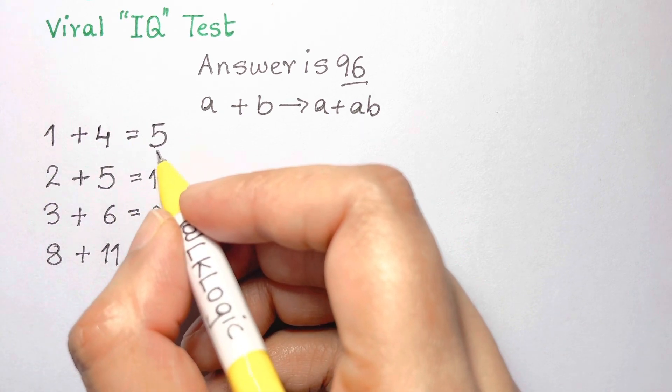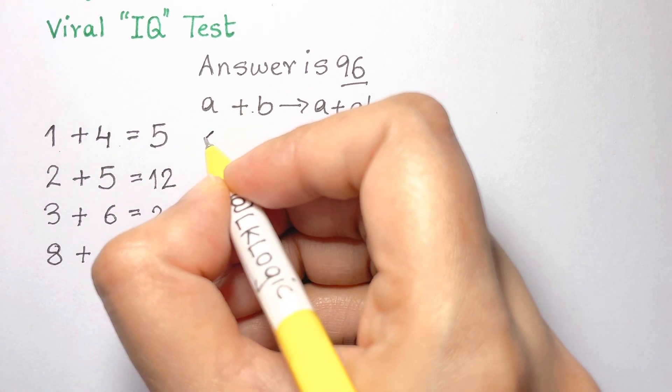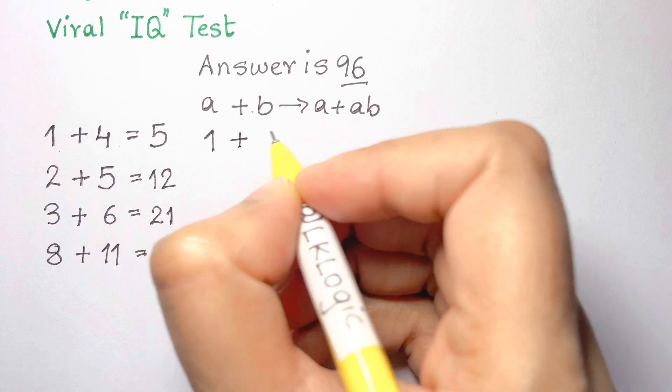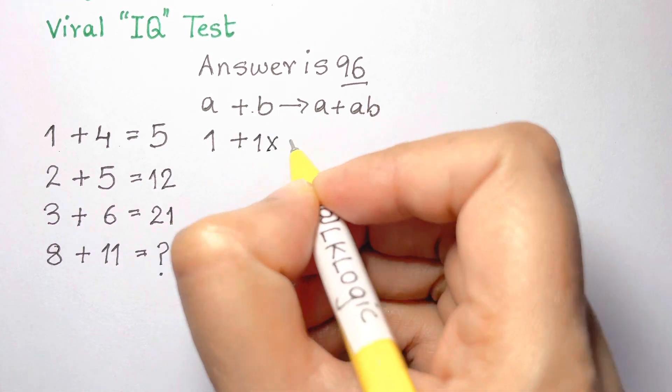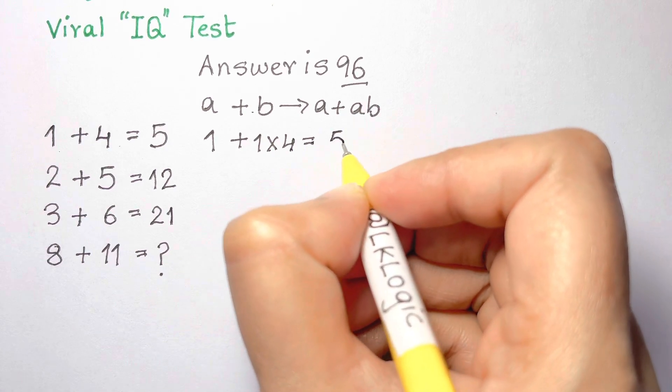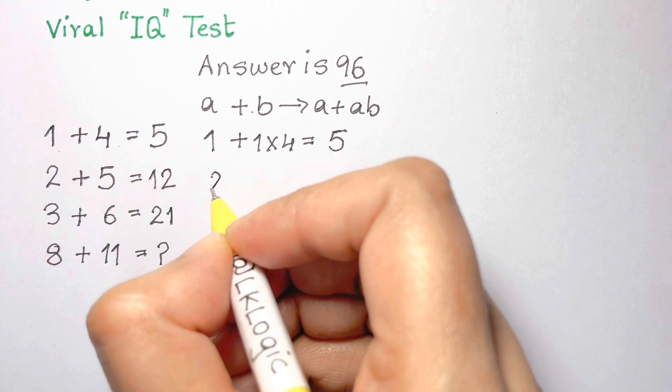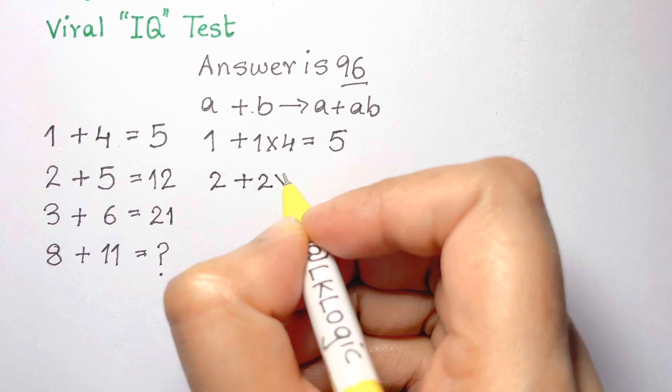The first line is 1 plus 4, so we should interpret 1 plus 4 as 1 plus 1 times 4. This will be equal to 5. The second line, which is 2 plus 5, should be interpreted as 2 plus 2 times 5.